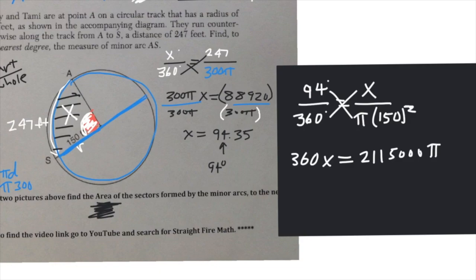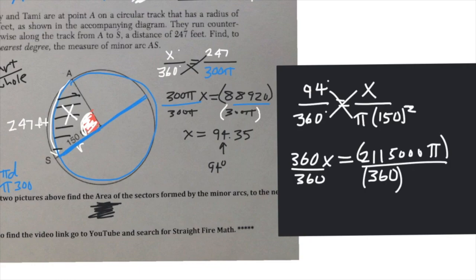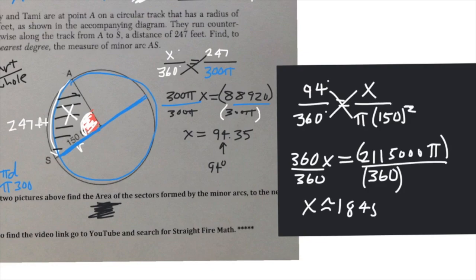Typing 2,115,000π divided by 360 into the calculator gives the area of the sector. Rounded to the nearest tenth, the area is 18,456.9 square feet.